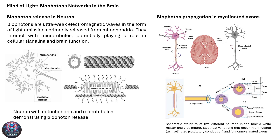The theory of electromagnetic consciousness extends to the role of biophotons in neural communication. Biophotons are ultra-weak electromagnetic emissions that interact with microtubules and could serve as carriers of information within the brain. This slide shows how biophotons, emitted primarily from mitochondria, might facilitate neural communication through electromagnetic interactions. The central image illustrates biophoton propagation in myelinated axons, which act as electromagnetic waveguides. These waveguides enable the efficient transmission of biophotons, potentially affecting cellular signaling and brain function. Biophoton emissions may contribute to information processing in the brain, adding a new layer to how electromagnetic fields could encode and influence conscious states.